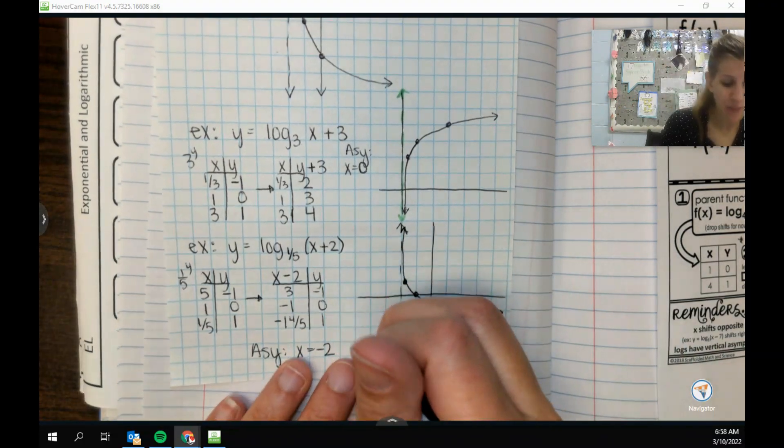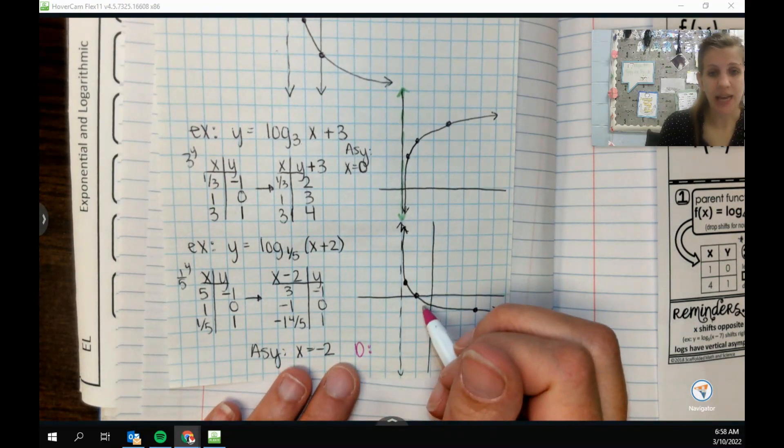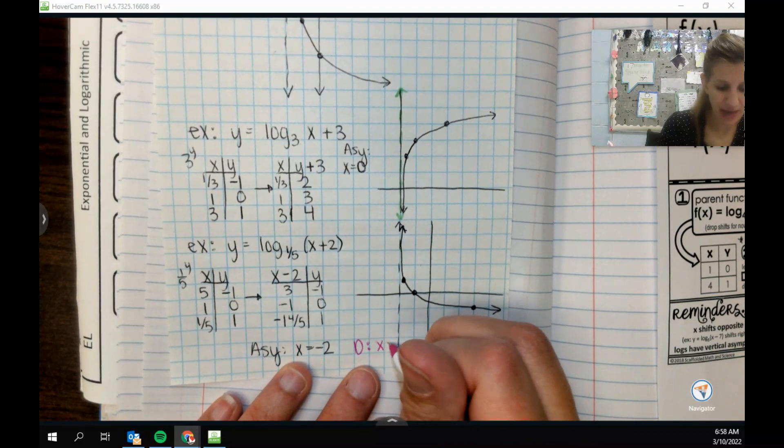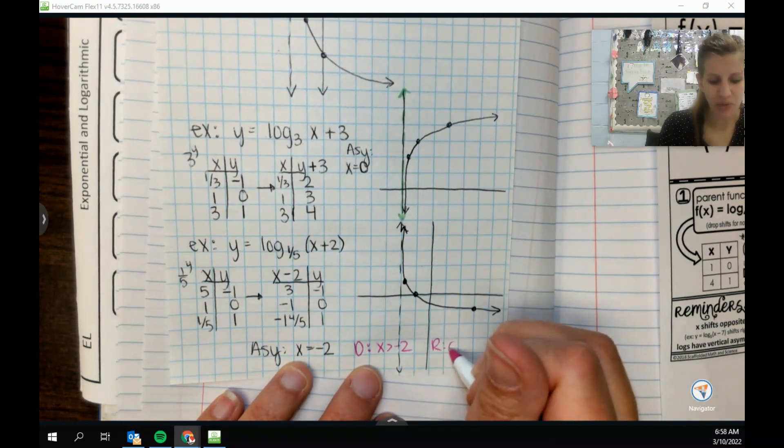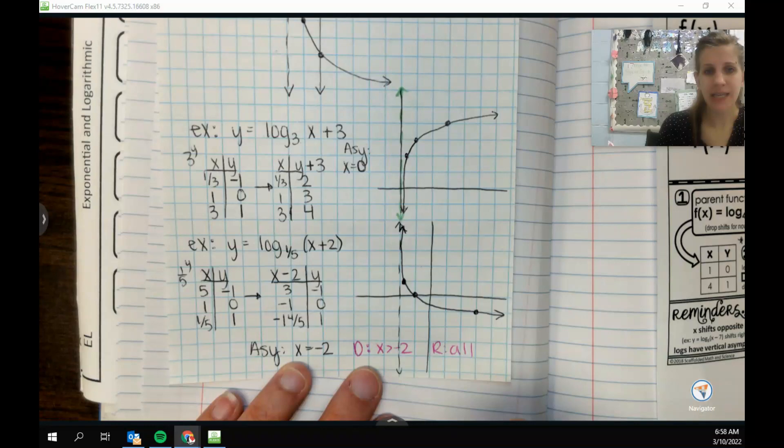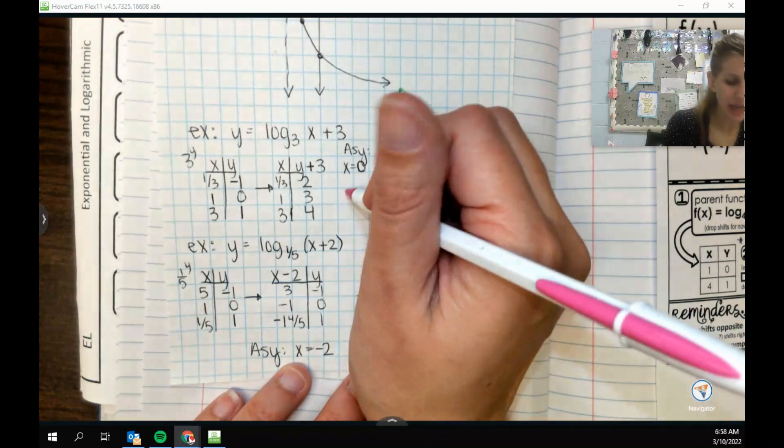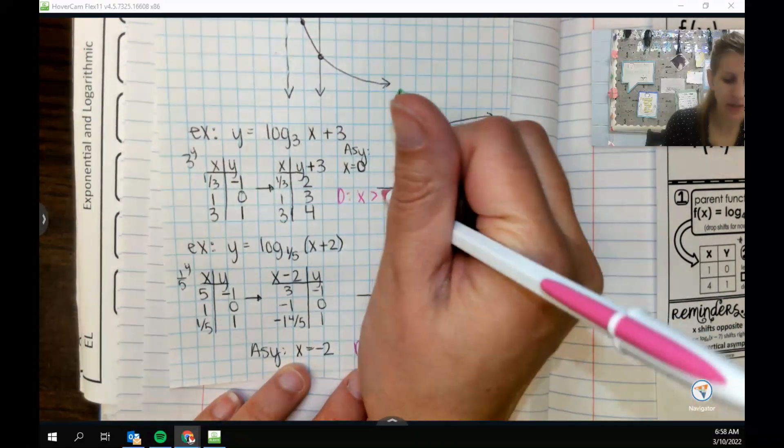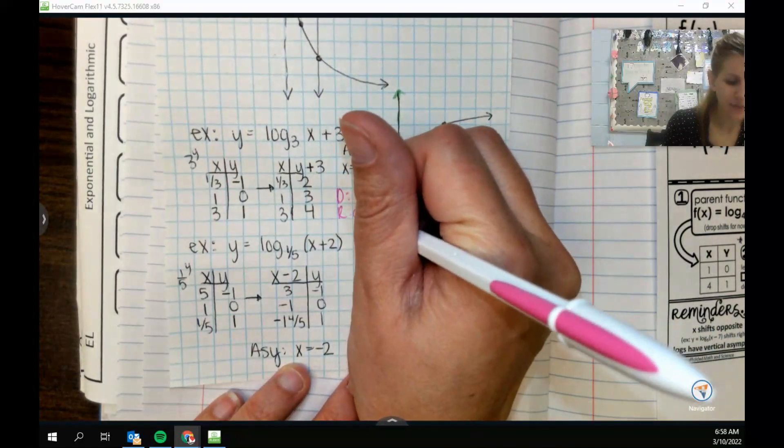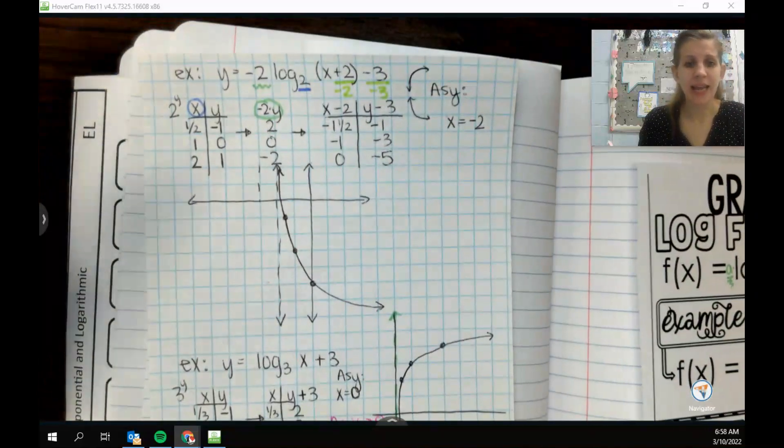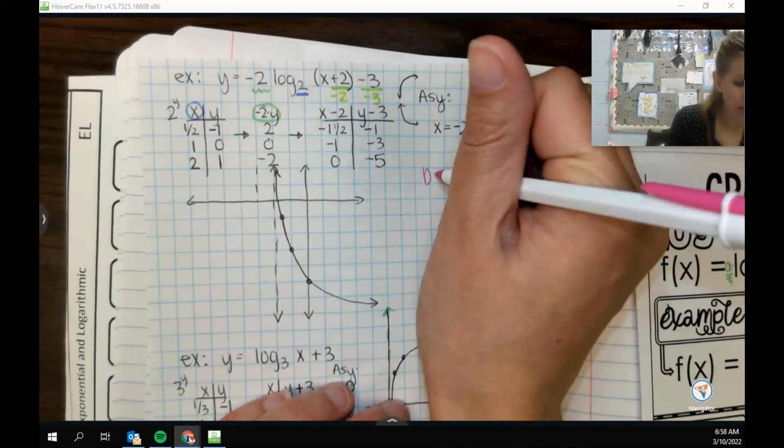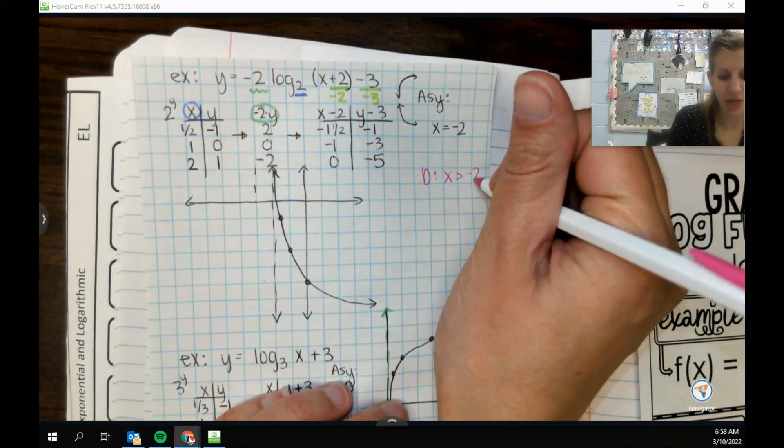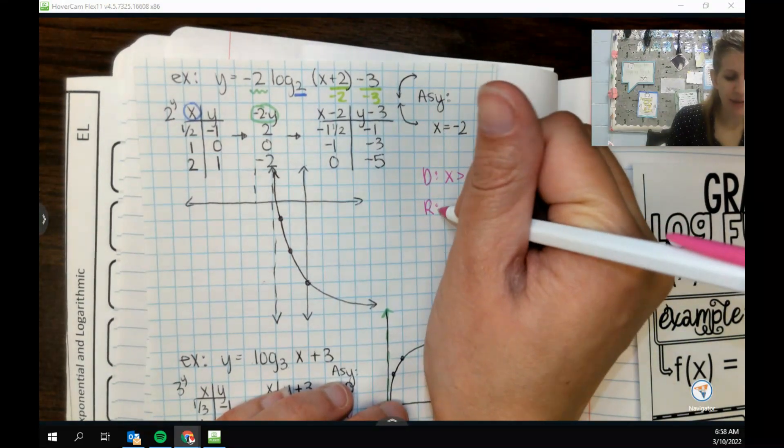So my domain is restricted by whatever my asymptote is. So here we are greater than negative 2. And my range is always all. So that's super nice. Similarly here, because my asymptote was at 0, my domain is going to be bigger than 0. Range is all. And then the first one we did, domain is closely related to our asymptote. So we are to the right of it. That's why we're bigger than negative 2. And range is all.